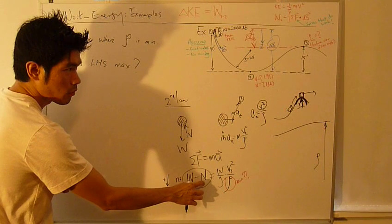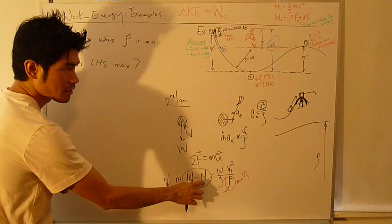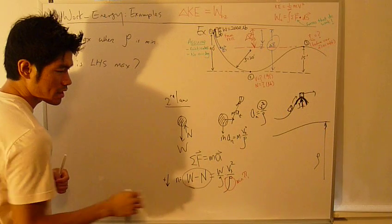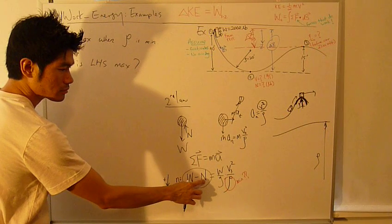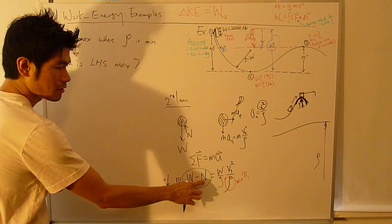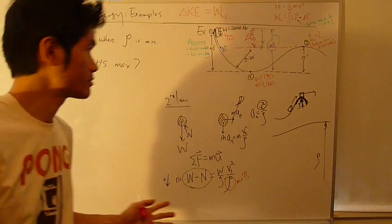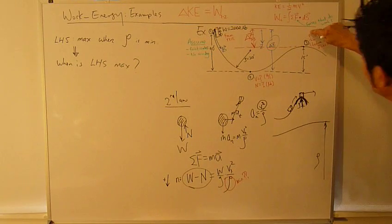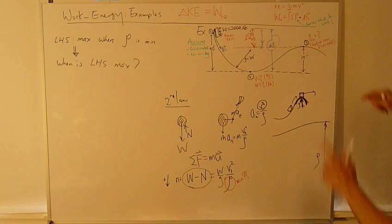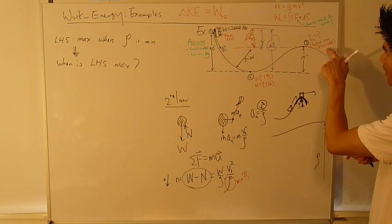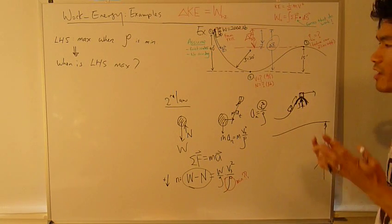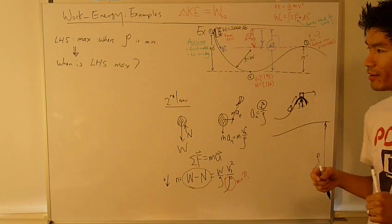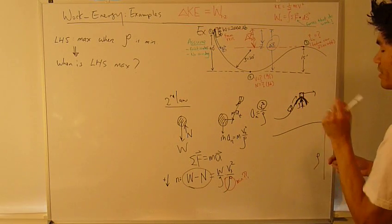Normal force at that position, position 3, is what? When row is minimum, that is right before the car flies off the track, just before that engine.